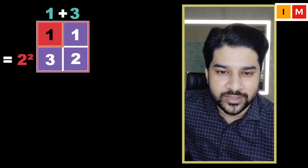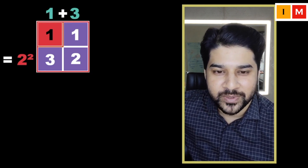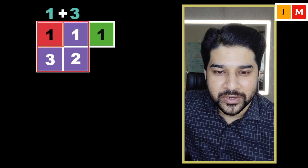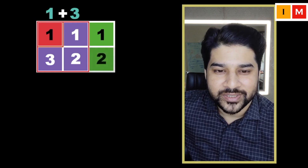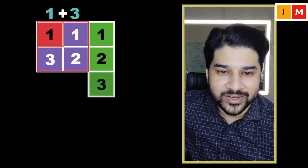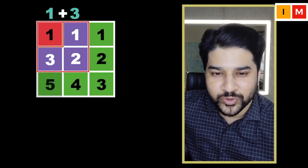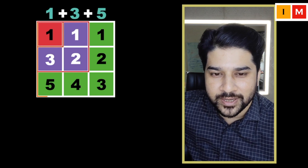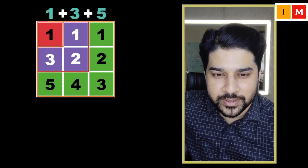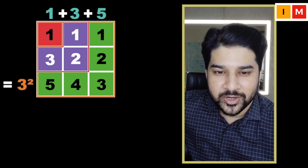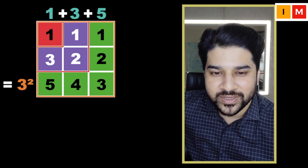Now let's say we want to build a square of 3 by 3, so we'll be needing 1, 2, 3, 4, 5 — so we needed 5 more squares to build a bigger square of 3 by 3, which is 3 squared.